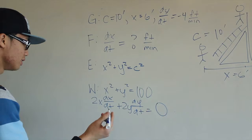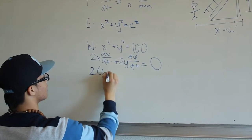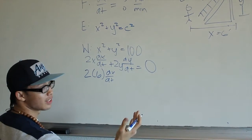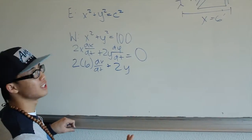Now we have an equation where we can plug things in. So what we're going to do is 2, and our x is 6, times dx dt, which is what we're trying to find, plus two of y. But what is y?